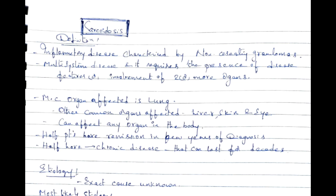Sarcoidosis by definition is an inflammatory disease characterized by non-caseating granulomas. It is a multi-system disease requiring involvement of two or more organs. The most common organ affected is the lung; other common organs are liver, skin, and eye. It can affect any organ. Half the patients have remission within a few years of diagnosis; the other half progress into chronic disease that can last for decades.